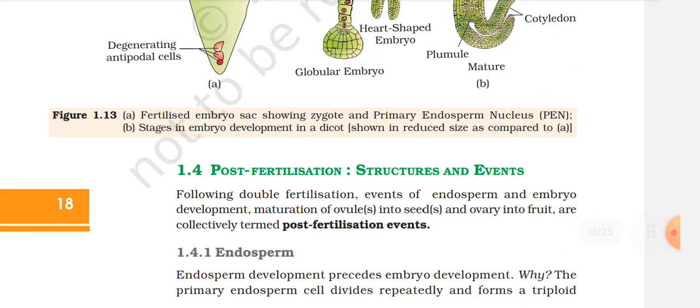Figure 1.13: A. Fertilized embryo sac showing zygote and primary endosperm nucleus (PEN). B. Stages in embryo development in a dicot showing reduced size as compared to the embryo sac.